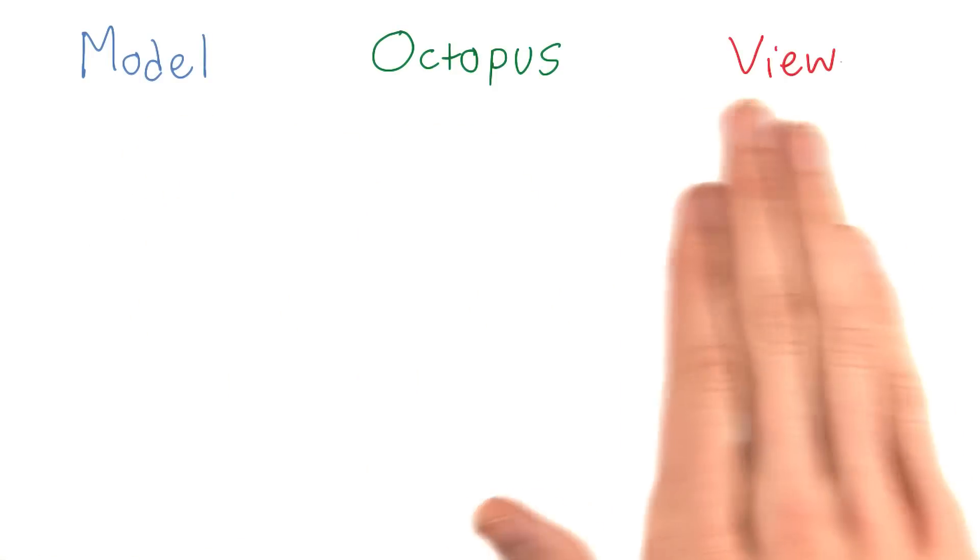In this course, we'll refer to them as M, V, and O: model, view, and octopus.